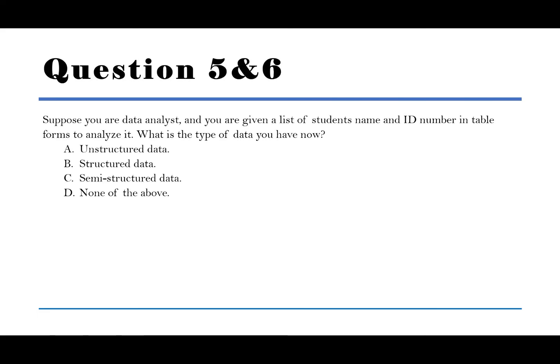Question number 5: Suppose you are a data analyst and you are given a list of student names and ID numbers in a table form to analyze it. What is the type of data you have now? A. Unstructured data. B. Structured data. C. Semi-structured data. D. None of the above. The answer is B, structured data.